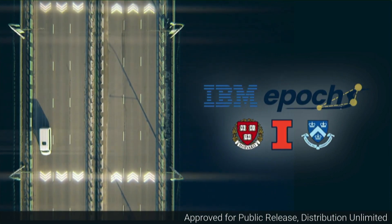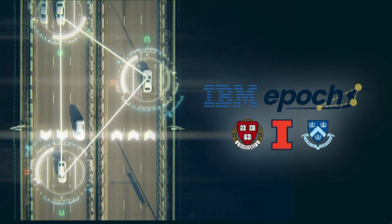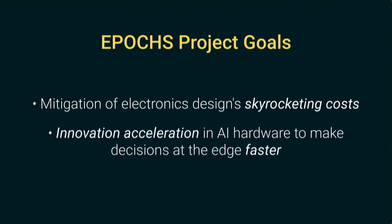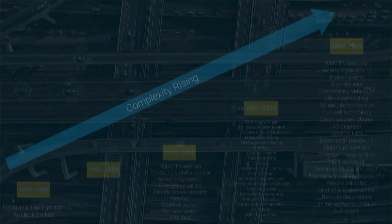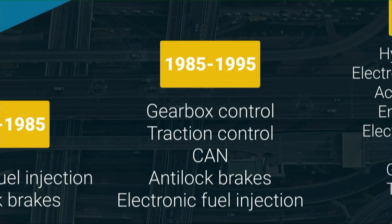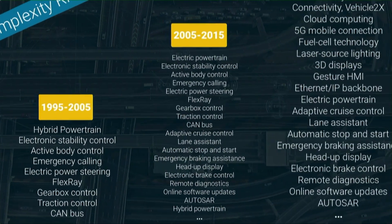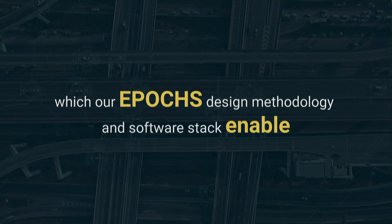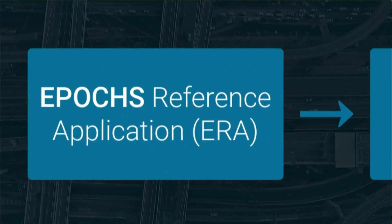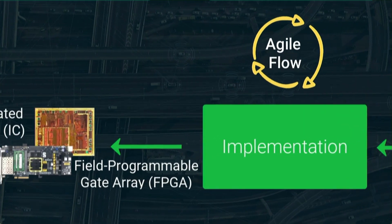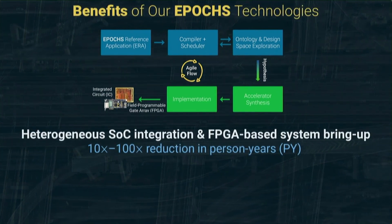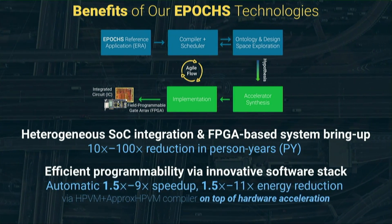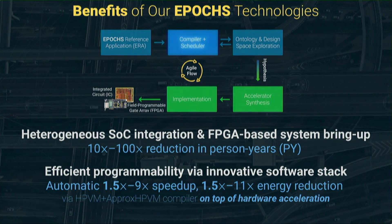The IBM-led EPOC's project focuses on the agile design of systems on a chip for connected autonomous vehicles while addressing two critical goals: mitigation of electronic design's skyrocketing costs, and innovation acceleration in AI hardware to make decisions at the edge faster. As automotive software is expected to become increasingly complex over the upcoming few years, it is imperative to design new systems on a chip, or SOCs, in an agile manner while maintaining programmability, which our EPOC's design methodology and software stack enable.